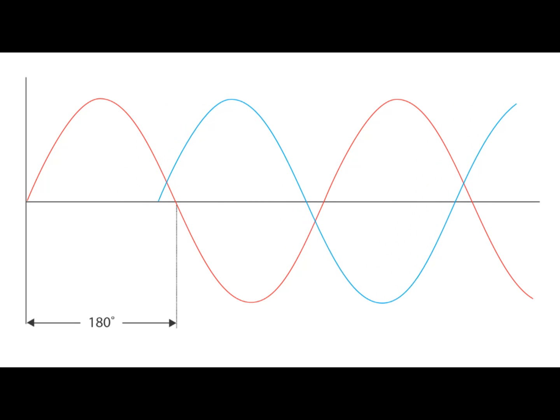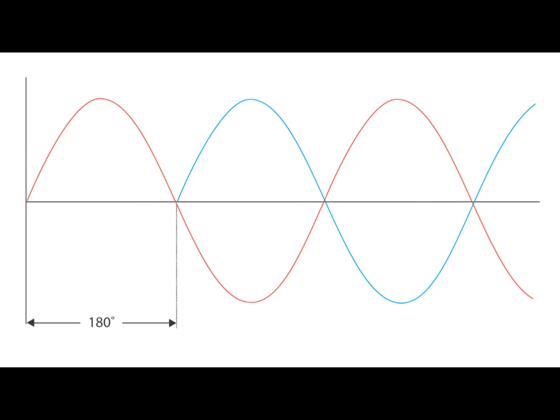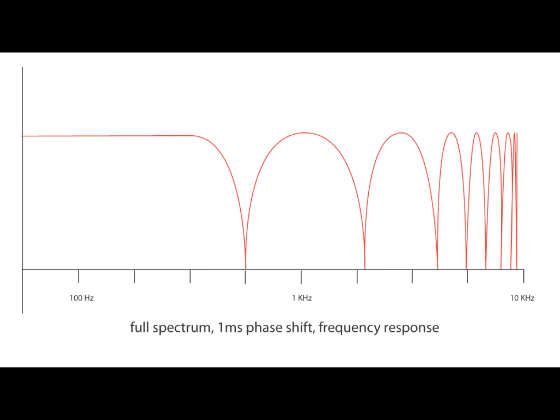At 180 degrees, two sine waves would completely cancel each other out if they're added together. In real life, there's usually more than one frequency happening in a signal. A guitar signal, for instance, will have many frequencies happening all at the same time. If we were to phase shift the signal equally over all frequencies — say by running it through a delay line — you would get a frequency response that looks like this. This is the frequency response of a signal that has been phase shifted one millisecond and added back to the original signal. Notice how there are many peaks and valleys, and they get closer together as they increase in frequency.